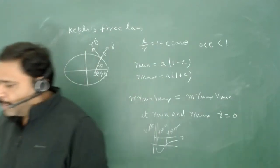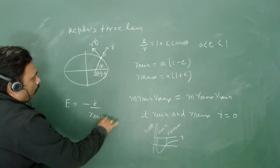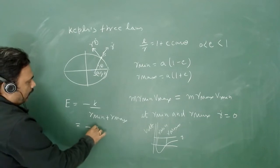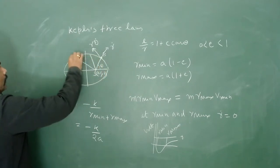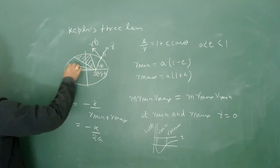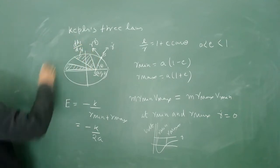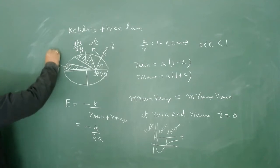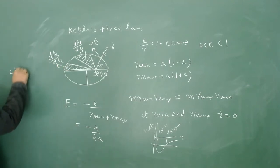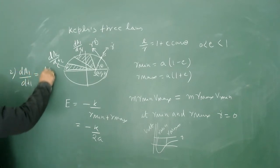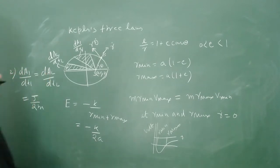The energy in an elliptical orbit equals −k/(r_min + r_max), which simplifies to −k/2a. Kepler's Second Law states that areal velocity is conserved: dA₁/dt₁ = dA₂/dt₂ = j/2m. You can take two swept areas and verify that the rate of area swept is the same, which you can easily prove from conservation of angular momentum.